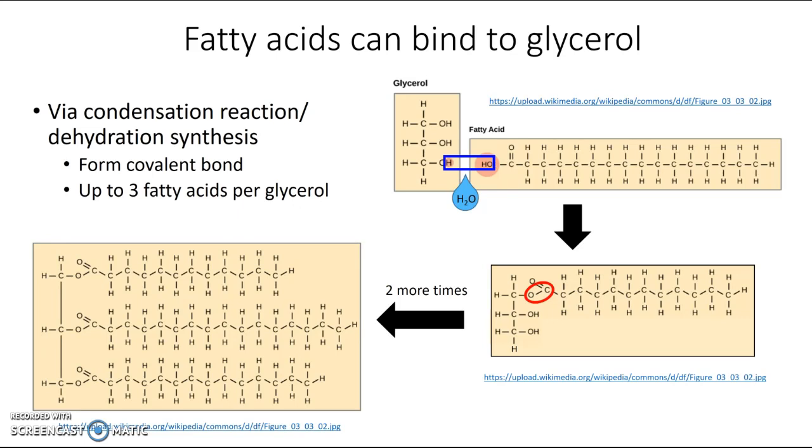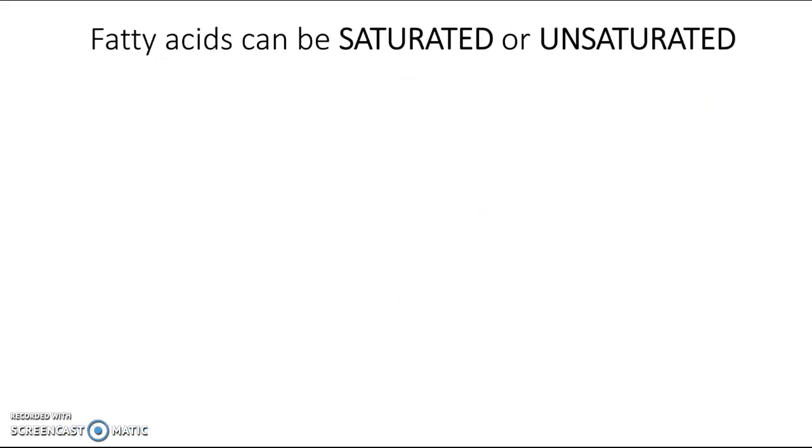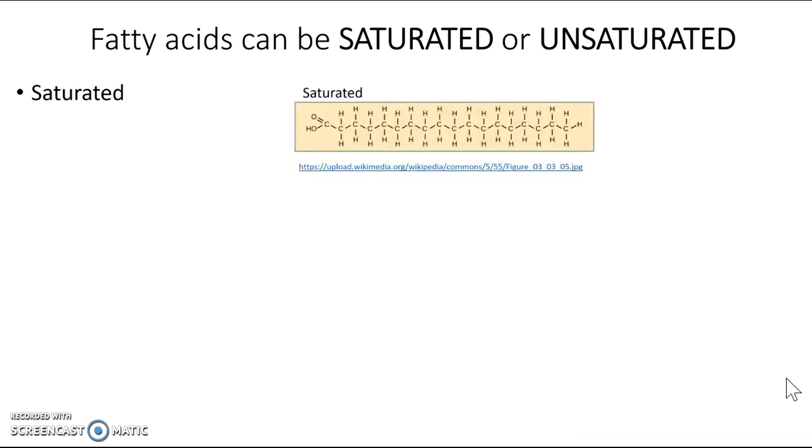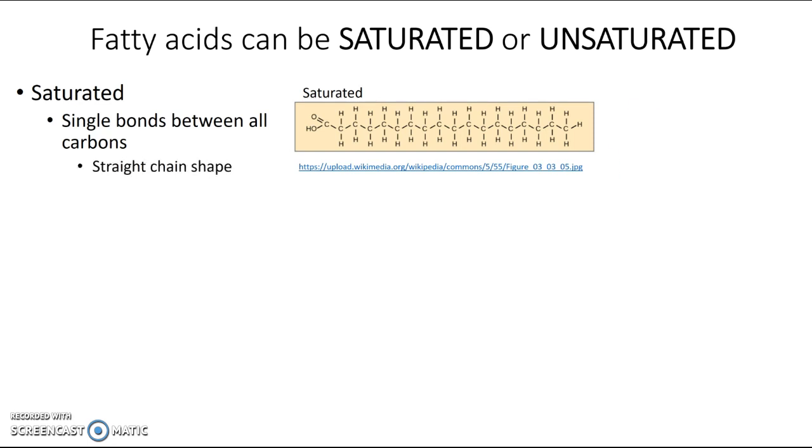There's one other thing that you need to know about fatty acids and that is that they can be either saturated or unsaturated. So you probably remember that if a molecule is saturated, that means it has the maximum possible number of hydrogens. So if you take a look at this fatty acid here, you can see it's got all the possible hydrogens it could have. And that's because there are only single bonds between the carbons in the hydrocarbon chain. Now if you remember the day that we built these models at the beginning of the unit, you probably remember that carbons can rotate around a single bond. And so because of that, there are no kinks in the chain, there's no bends, and so it ends up being a long straight chain. So saturated fatty acids end up with a straight chain shape.